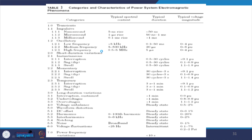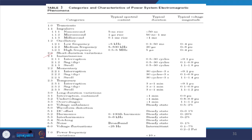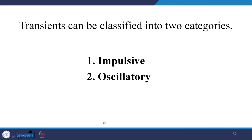This is the categorized characteristics of power system electromagnetic phenomena. It has been discussed in detail in a separate standards class, so only selected values are highlighted here. For example, interruptions last 0 to 30 cycles at less than 0.1 per unit; impulse durations can be in microseconds or milliseconds; sag, swell, DC offset, harmonics, and bandwidth are all tabulated. Transients can be classified into two categories: impulsive and oscillatory.